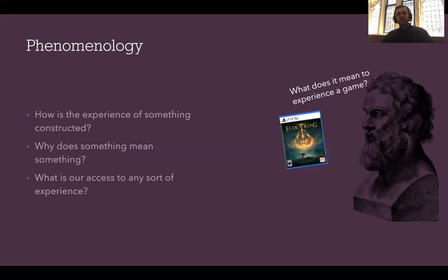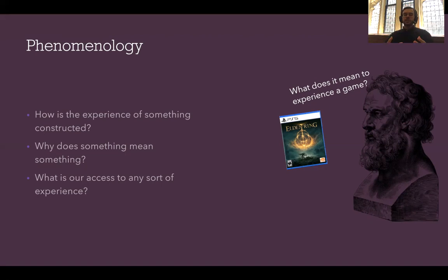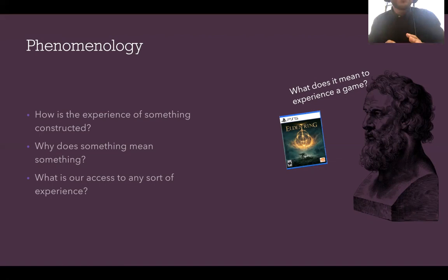Almost two thousand years later, phenomenology becomes a thing — it just took two thousand years for people to figure out that ontology might not be the best approach. It actually starts with Immanuel Kant, but real phenomenology gets started in the early 20th century with Husserl and Heidegger. Phenomenology shifts the question from 'what is the essence of something' to 'how is the experience of something constructed' — what does it mean to experience a particular thing, and how can we have access to that experience and its constituting elements?